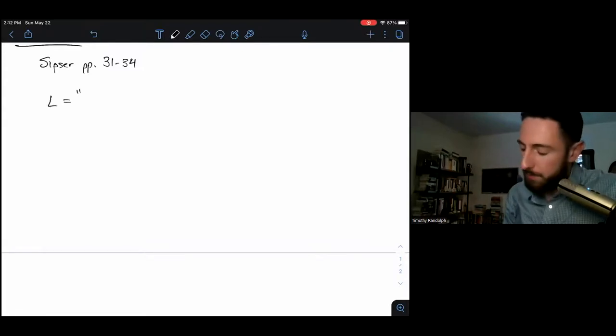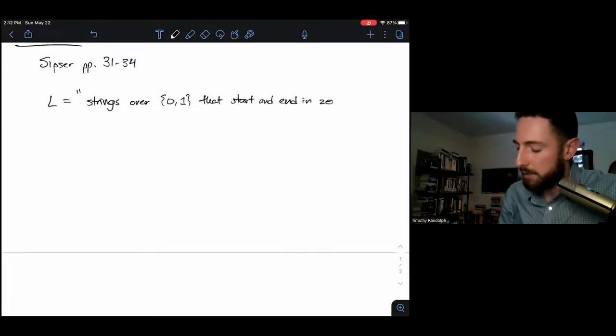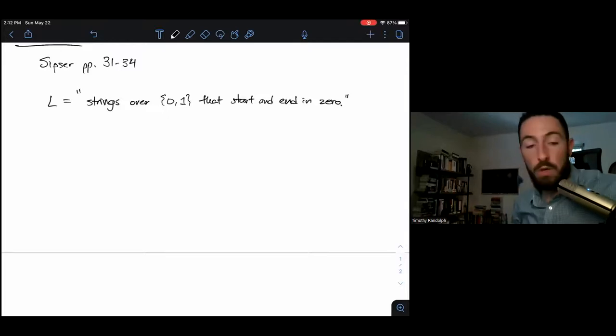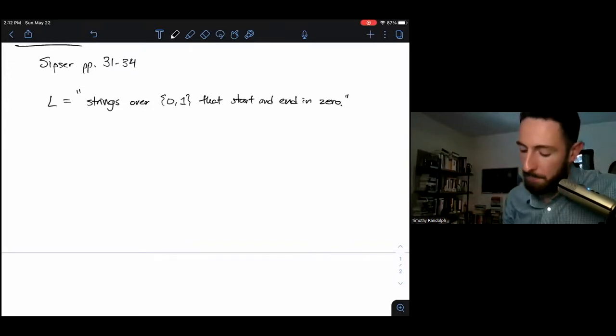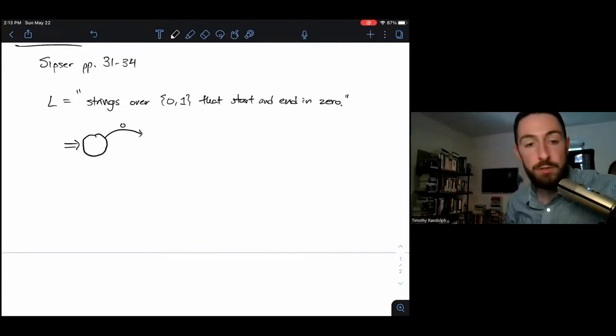There are two completely equivalent ways to represent a DFA. One is with a state diagram and the other is with a formal definition. So we'll start with the state diagram. Let's say we've got some language, the language of all strings over {0,1} that start and end in 0. If you want some guidance on how to build the DFA just given a description of a language, look at the other companion video for this lecture.